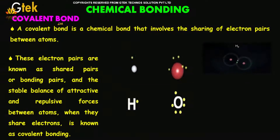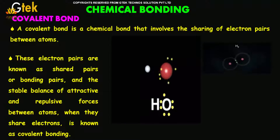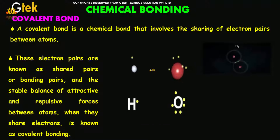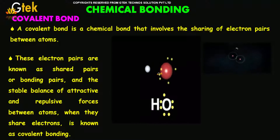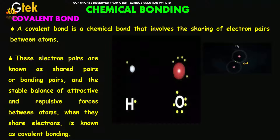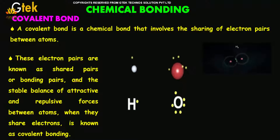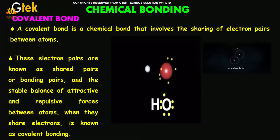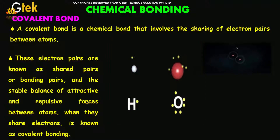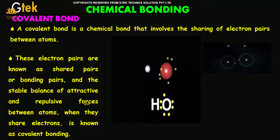A covalent bond is a chemical bond that involves the sharing of electrons between the atoms. You are able to see the sharing of electrons here. These electron pairs are known as shared pairs or bonding pairs. The stable balance of attractive and repulsive forces between atoms when they share is referred to as covalent bonding.